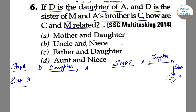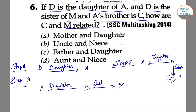Step 3: A is the brother of C — it means the gender of C is male, but the gender of A is unknown. The final tree diagram shows: D is the daughter of A, D is the sister of M, and A is the brother of C.